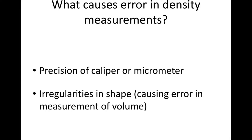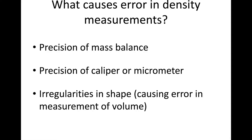Beyond that, the errors in actually measuring density are quite obvious. If using a caliper or micrometer, it will depend on the precision of those instruments. For this lab this semester, since we are doing it remotely, it's going to depend on the ruler and the process of image analysis — that's what will affect the error in density measurements. Also, if there's any irregularities in shape, that will cause errors in the volume measurement. And also the balance — any precision related to the mass balance.